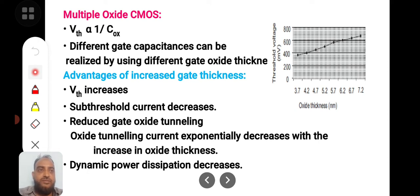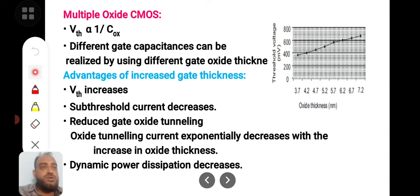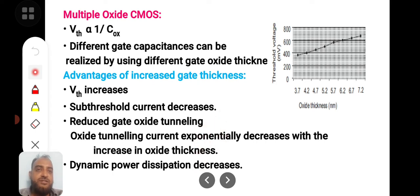For achieving high threshold voltages, different researchers have published results with oxide thicknesses of 3.7 nanometers, 4.2 nanometers, and 5.7 nanometers, reporting corresponding threshold voltages. These results are collected and presented here, showing that as oxide thickness increases, threshold voltage keeps on increasing. These are the advantages of having a large gate oxide thickness.